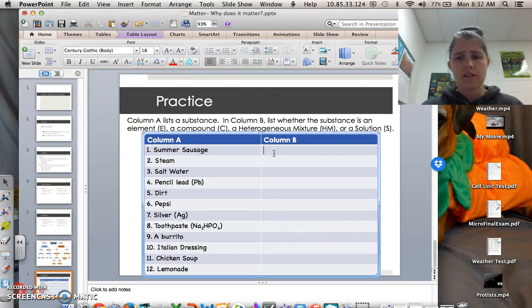This will be our heterogeneous mixture. And our directions are in column B, list whether the substance is an element with an E, a compound with a C, a heterogeneous mixture with an HM, or a solution. Remember, that's a homogeneous solution.